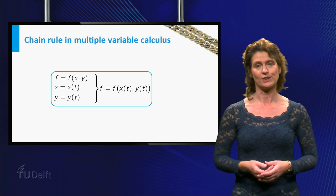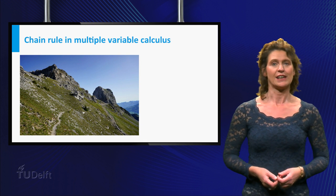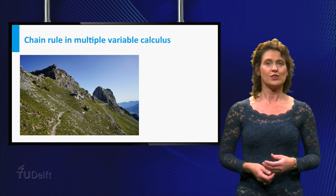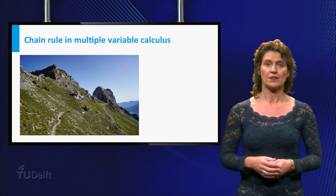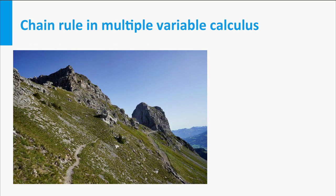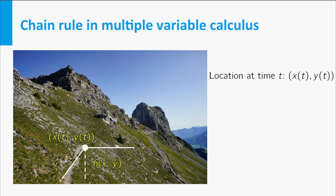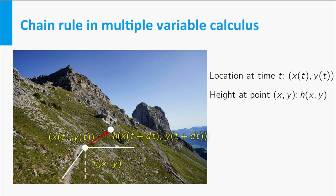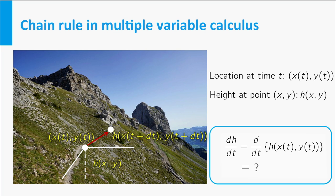This occurs, for example, in the following situation. Suppose you are hiking in the mountains and you want to know the slope of the route you are taking. Then you would need to know how fast your height changes. First, you need to know where you are on the mountain at each time — your x and y coordinates at time t. Second, you need to know what the height of the mountain is at each location. So there are three functions at play: x(t) and y(t) give your location, and h depending on x and y gives the height of the mountain. You want to find how quickly h changes with t while walking along the path, so you are looking for the derivative of h with respect to t after plugging in x(t) and y(t).